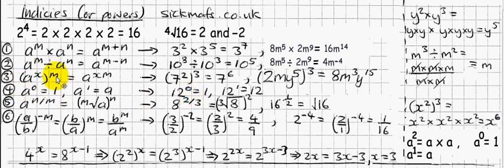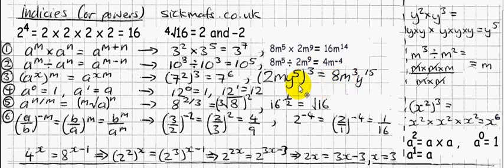If you've got a to the power x all to the power m, you just multiply the powers. Here's an example: 7 squared all cubed is 7 to the 6, because 2 times 3 is 6. If something doesn't already have a power — like 2 cubed is just 8, or m cubed is m cubed — but when you do have a power, like y to the power 5 to the power 3, you multiply the powers: 5 times 3 is 15, so y to the 15.